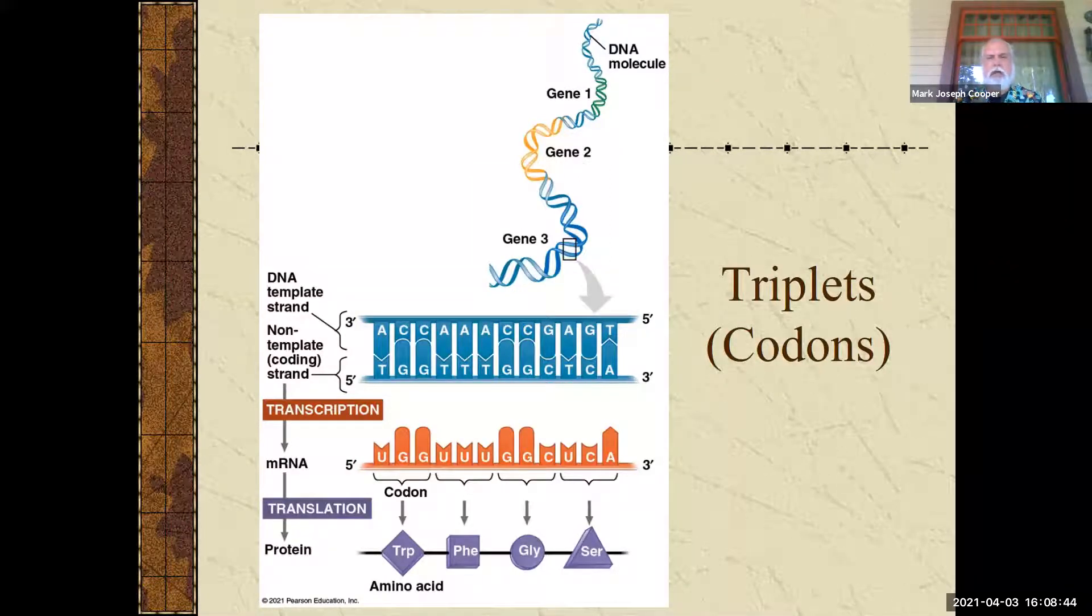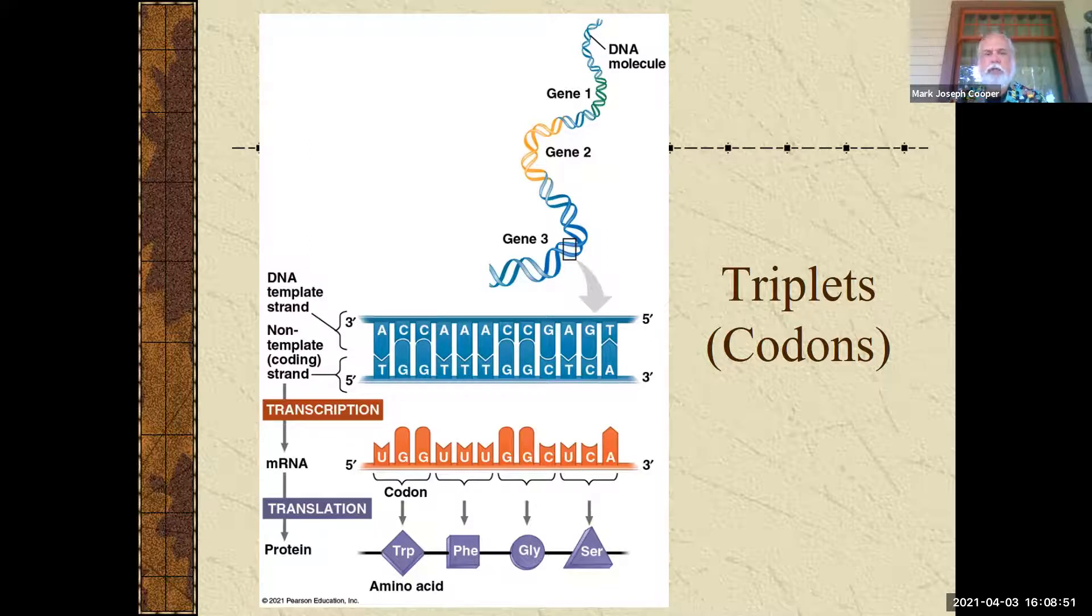Alright, what do you need to know? There are some terms you need to know. It turns out that we have discovered that DNA is written in groups of three. These are called triplets, kind of a general term, but a better term for certain molecules are codons. So what you need to know is there is a template strand and a non-template coding strand.